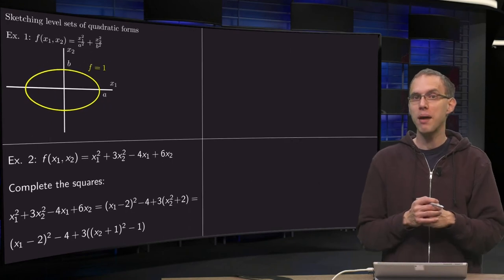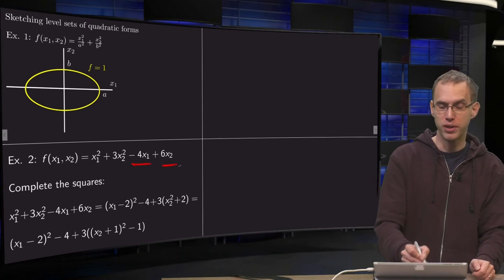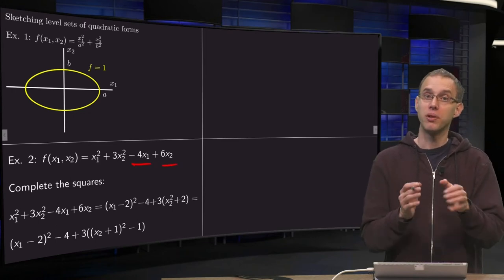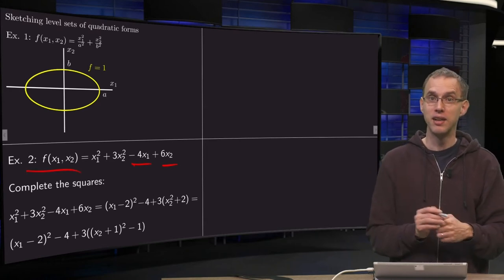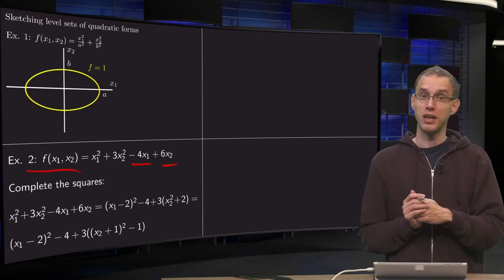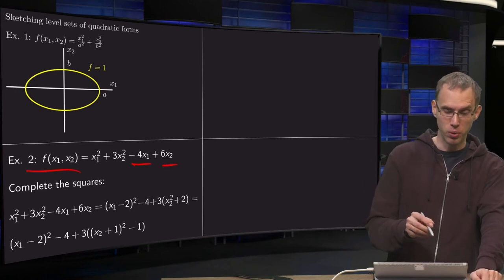Now, what happens if we have some linear terms? So we don't have a quadratic form anymore, but we still can try to sketch the level sets of this function f. So what happens then? Fortunately, we can also get rid of the linear terms by the following trick. We can complete the squares.